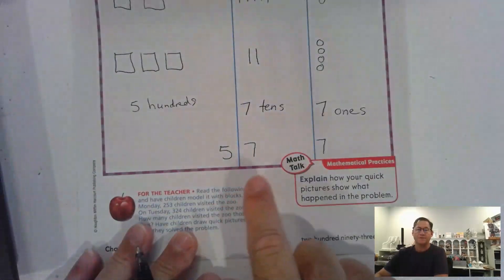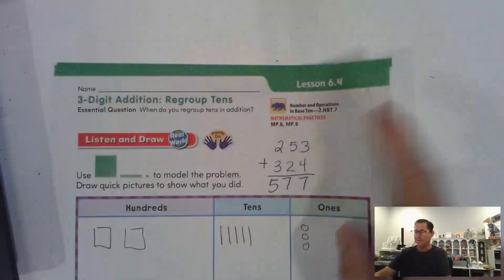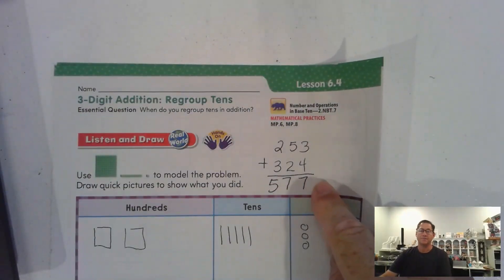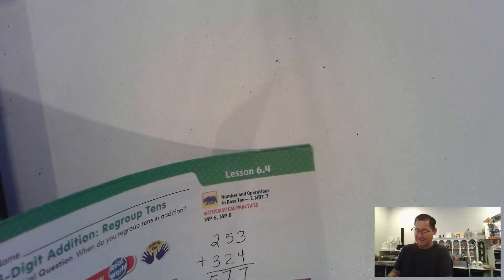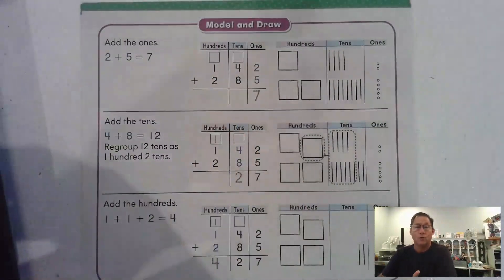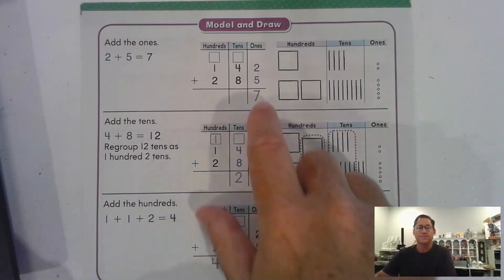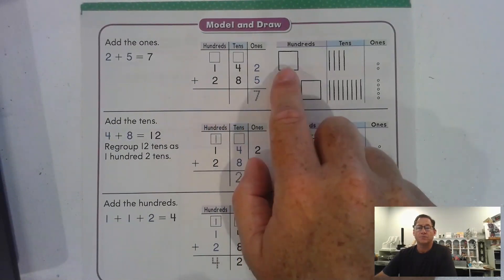Five hundred, seven tens, seven ones — five hundred seventy-seven — and I showed that with the traditional addition method. Now let's look at what it looks like when we have to regroup tens. After modeling the picture, we have 142 — one hundred, four tens, two ones.